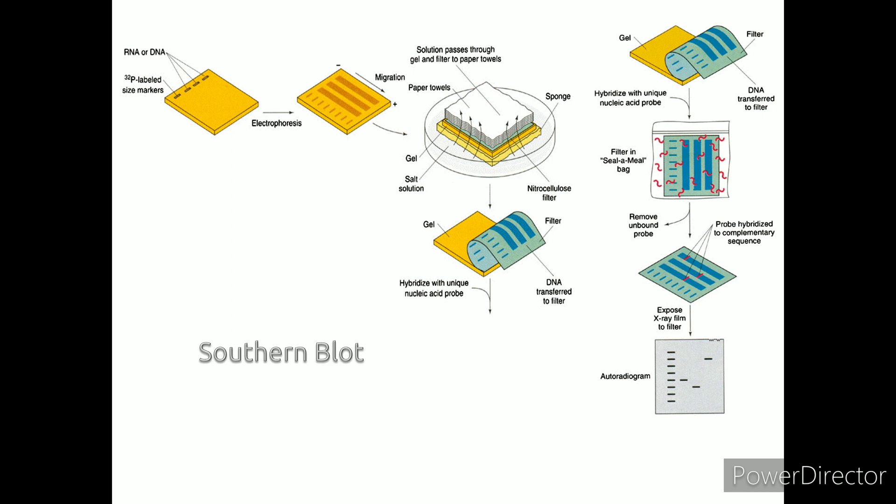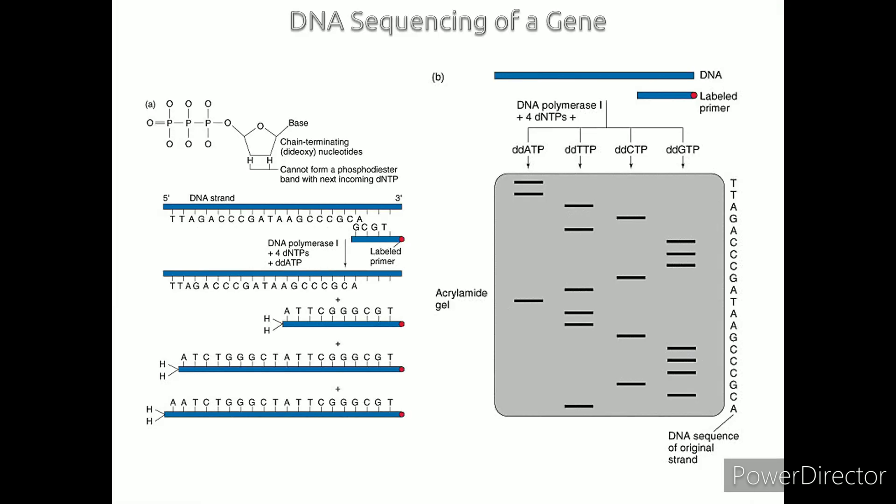DNA sequencing of a gene: the Maxam-Gilbert method involves bases of DNA molecules being selectively destroyed. It is not used very much anymore because the reagents are highly toxic and very dangerous.